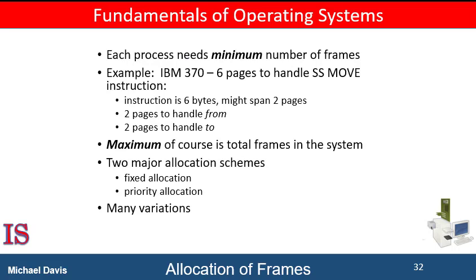How do we allocate the fixed amount of free memory among the various processes? If we have, for example, 93 frames and two processes, how many frames does each process get?